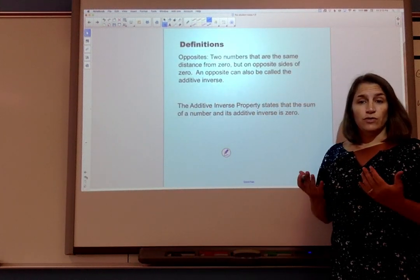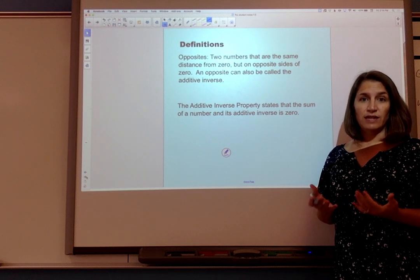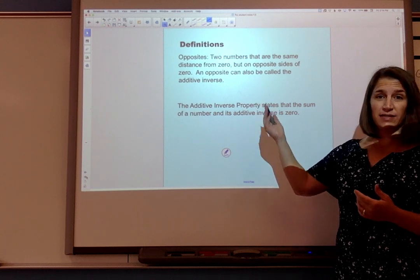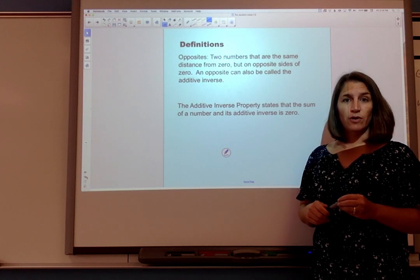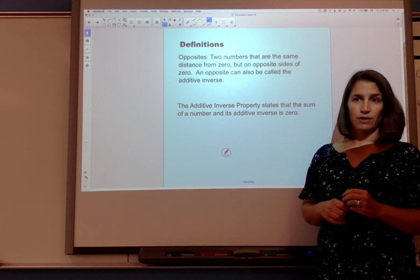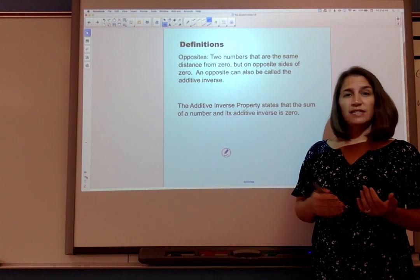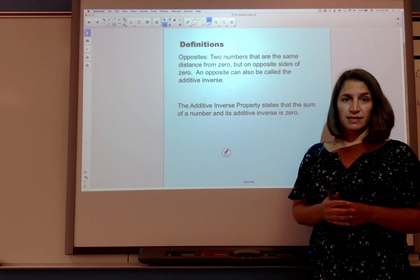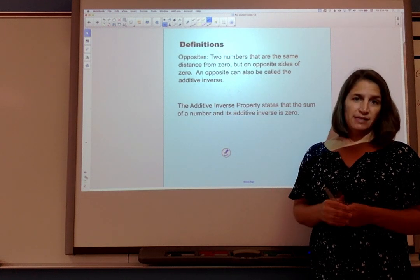Now in order to do our addition of integers with opposite signs we need a few definitions. First opposites. Opposites are two numbers that are the same distance from zero but on opposite sides of zero. So 3 and -3 would be opposites. 15 and -15 would be opposites. They have the same magnitude or absolute value but opposite sides of zero.